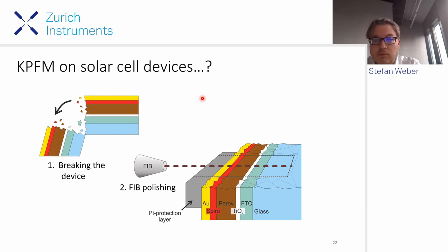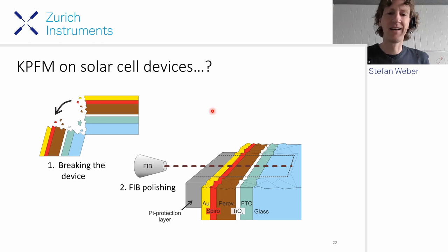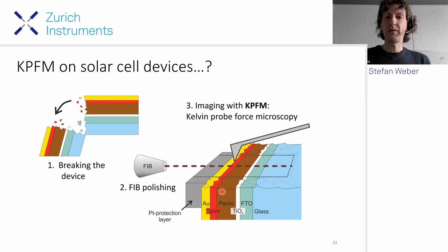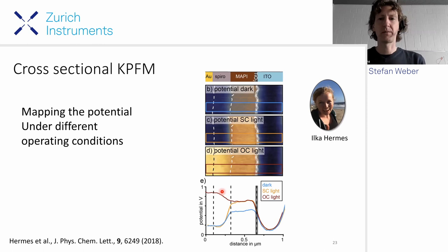We developed a careful method of breaking the device and polishing the cross section. We use FIB polishing to get a smooth cross section to avoid topography crosstalk as much as possible, using thick platinum protection layer and very slow milling to avoid contamination with gallium ions. Then we use this smooth cross section to do Kelvin probe force microscopy. This is an awesome paper by Ilka you definitely need to check out. We can map the potential distribution under different operating conditions, which is quite exciting.